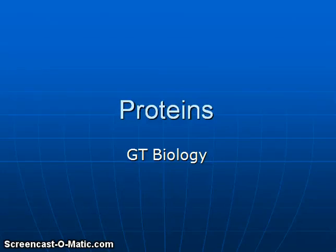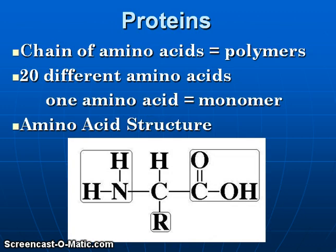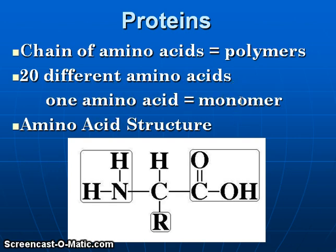Hi everyone. Today's presentation covers the topic of proteins. Proteins are polymers made out of a smaller subunit called an amino acid. So an amino acid is what we refer to as a monomer. When you put together a bunch of monomers you do get a polymer.